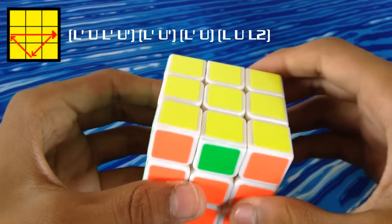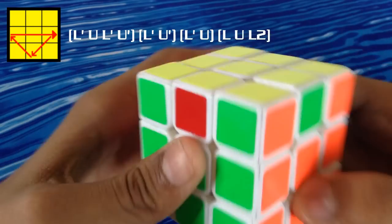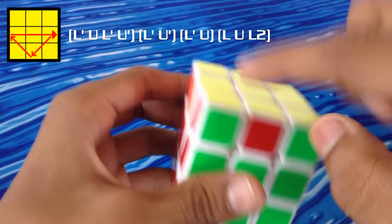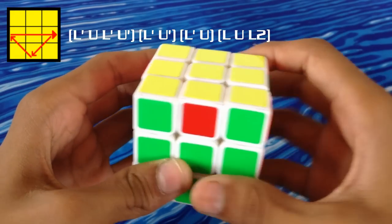At number 3 we have the U-A permutation. In this one side is fully solved and if you turn it to the back this piece needs to go to the left side. All you have to do is apply this algorithm.